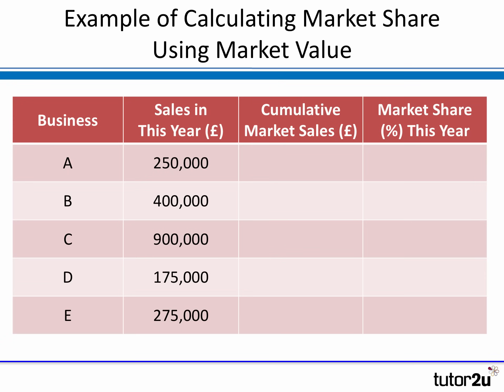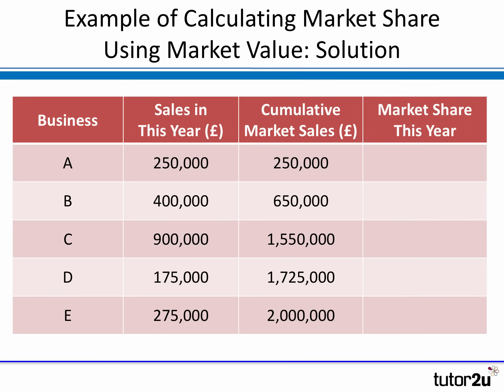When you get information on markets and market size and you're required to calculate market share, you need to find the total value of the market. So, say you have a table and you are asked to calculate market share — the first thing to do is calculate the total size of the market before any calculations. If we have five businesses here — A, B, C, D, and E — they each have separate sales ranging from a low of 175,000 for company D up to 900,000 for business C. Add all five businesses' sales together and it comes to two million pounds — that is the size of the market. You can then calculate the market share of each of those five businesses compared with the total market size of two million.